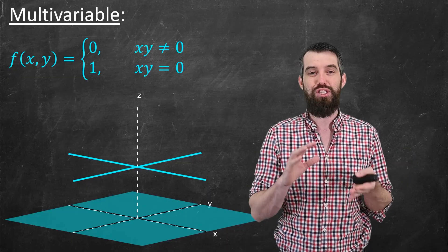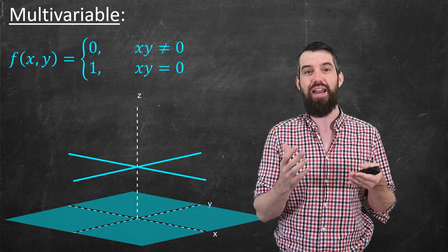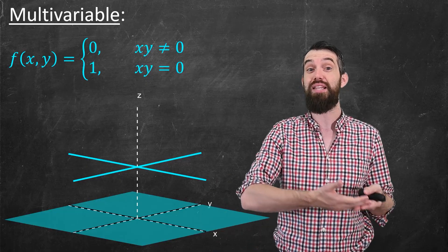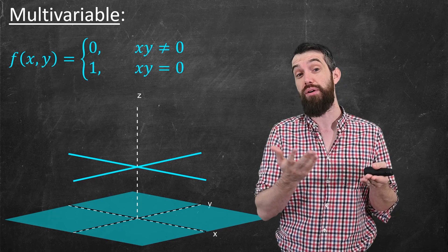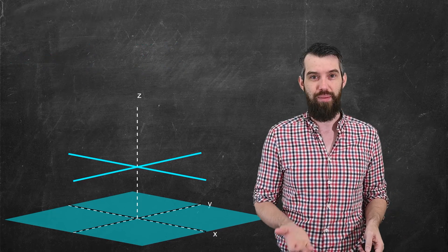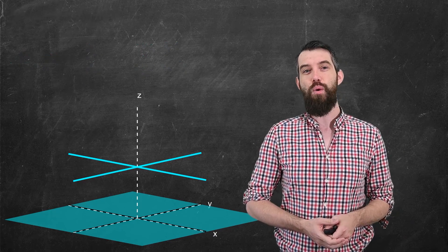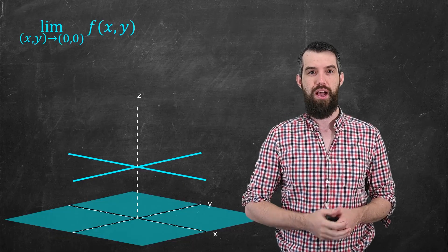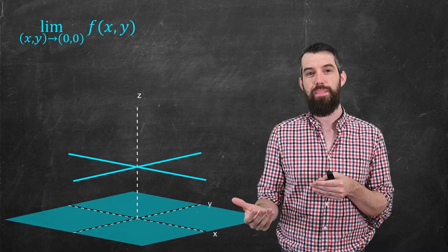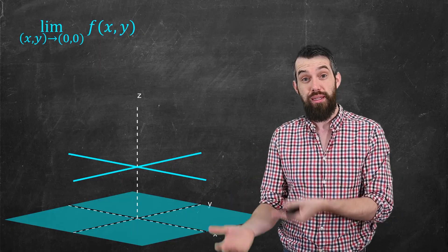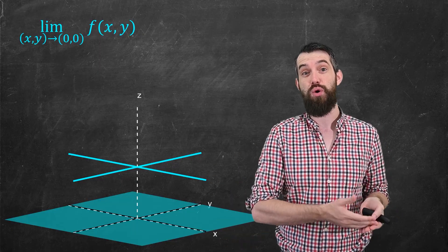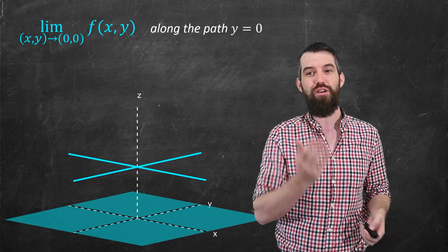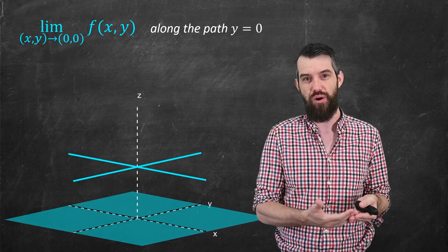But perhaps we should try to actually state that a little bit more precisely with limits. Because what is continuity? It means that the limit exists and the function exists and they are equal. So let's compute the limits of this particular thing. I want to take first the limit going to (0,0) of this function f(x,y). Now, when we first introduced limits in this multivariable calculus course, we saw that we could do limits along a bunch of different paths. And so I'm going to first begin with a path which is going along y equal to 0.